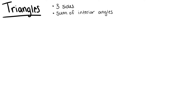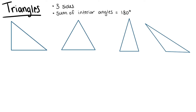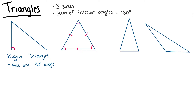We have four types of triangles. Right triangles, which have exactly one right angle. Equilateral triangles, where all three sides are congruent and all three angles are congruent. So all components of the triangle are congruent to each other.